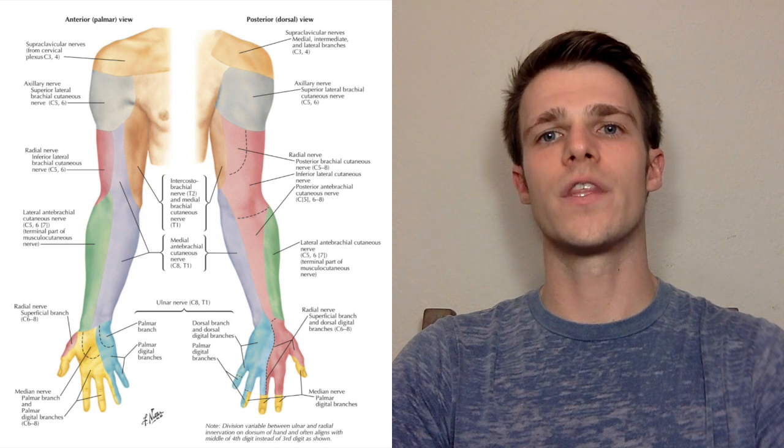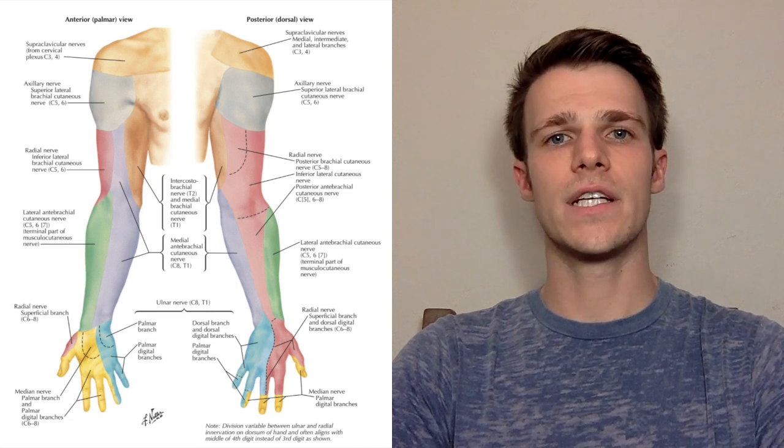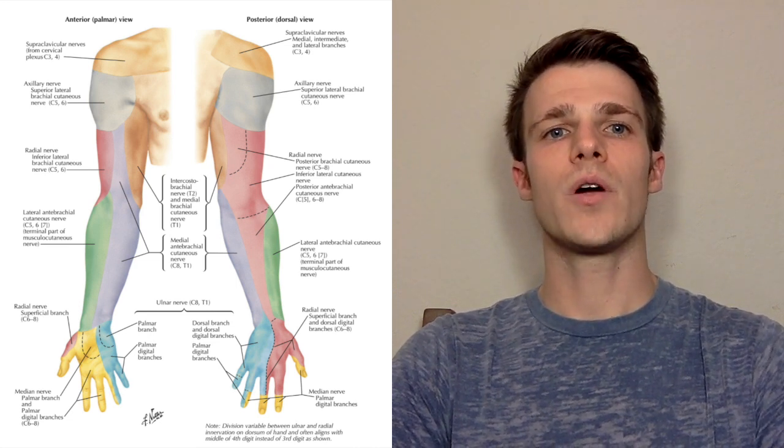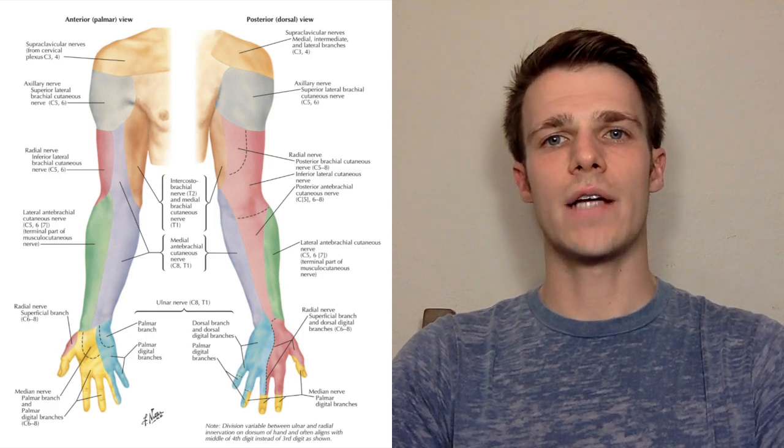Next, do a good neurovascular exam, paying special attention to the distal pulses and function of the axillary nerve, which is the most common nerve injured in anterior shoulder dislocations. Ask the patient if they have any numbness, tingling, or altered sensation to the shoulder. Axillary nerve dysfunction will present with loss of sensation over the lateral shoulder since it innervates the deltoid and the teres minor muscles. Grab a cotton ball and have the patient close their eyes, then gently brush the cotton ball across the lateral shoulder, instructing the patient to tell you if sensation is normal, decreased, or absent.